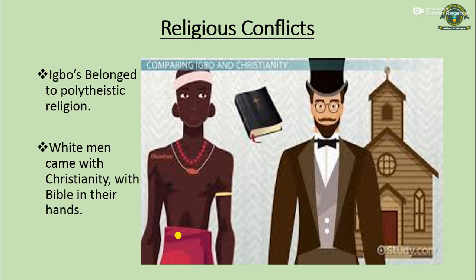On the other hand, the white men came with Christianity — they worshipped only one god, which was unacceptable for Igbo society. Furthermore, they tried to expand their religion and to some extent they succeeded. When the Igbo people observed that Christianity called the killing of twins a brutal act, they stood against it and tried to stop its expansion.